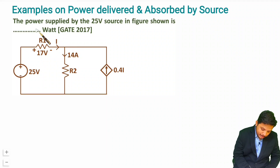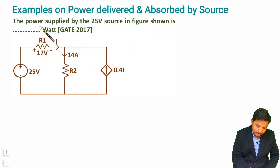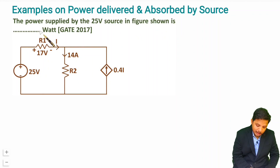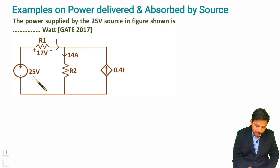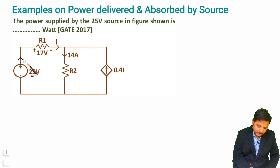In this question we have the power supplied by a 25 volt voltage source — how much is it? So we have this 25 voltage source and we need to find how much power it supplies. You can see the current supplied by it is labeled I in this circuit.